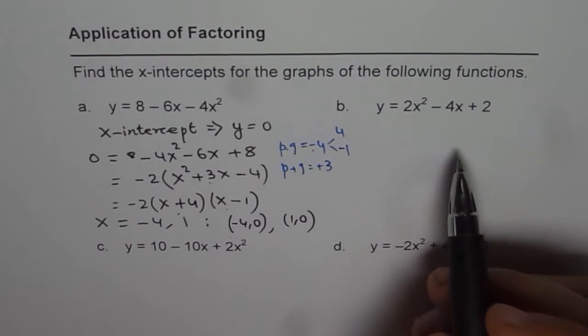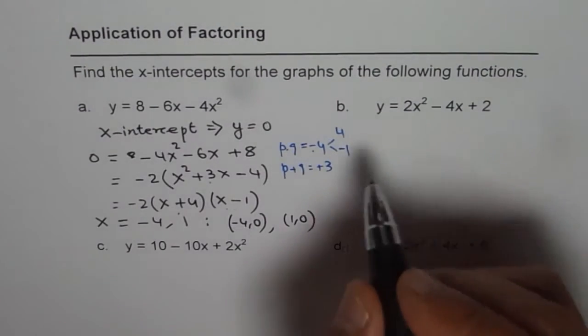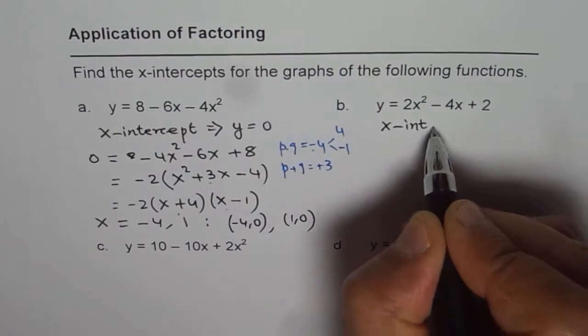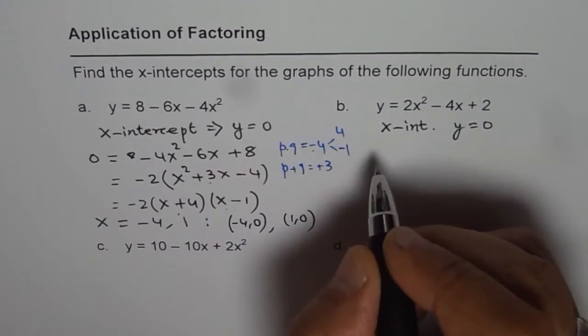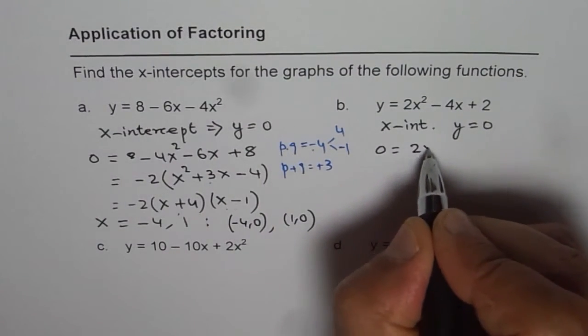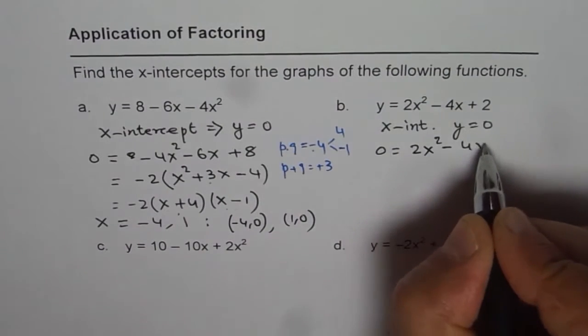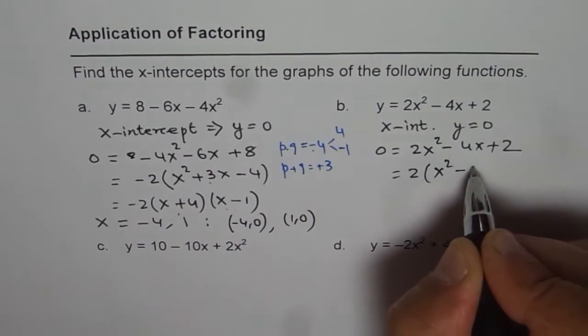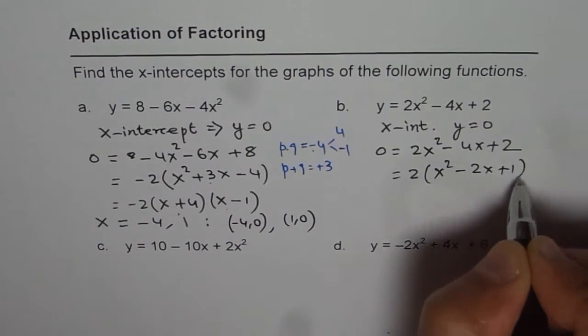Let us do the next one. So this time we will equate y to 0 since it is x-intercept. x-intercept means y equals to 0. So we have 0 equals to 2x squared minus 4x plus 2. We can factor 2 common. x squared minus 2x plus 1.